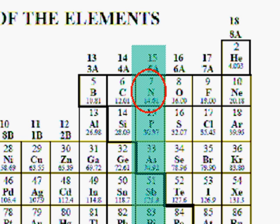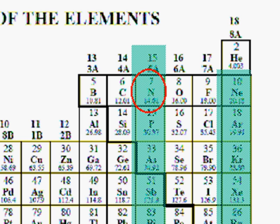When nonmetals form negative ions, their tendency is to gain enough electrons to become isoelectronic with a noble gas. Nitrogen tends to gain three electrons to become isoelectronic with a noble gas, in this case, neon.